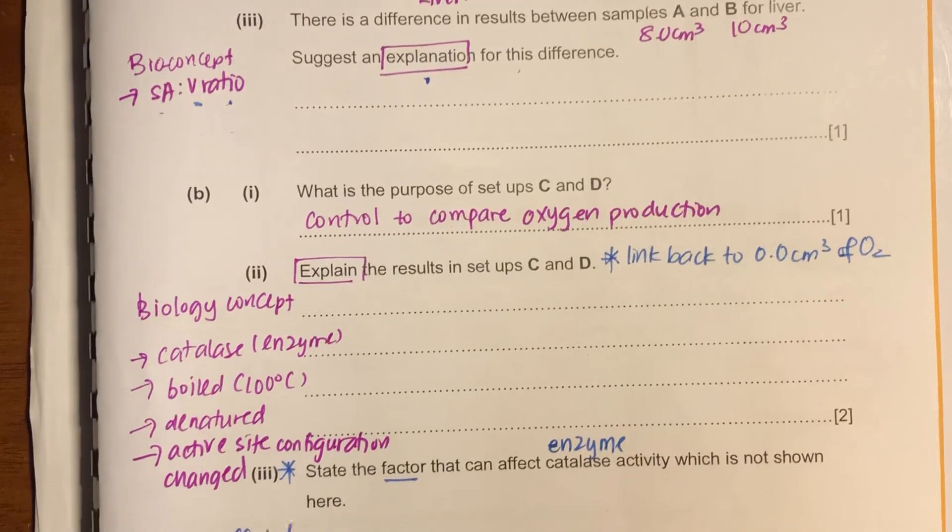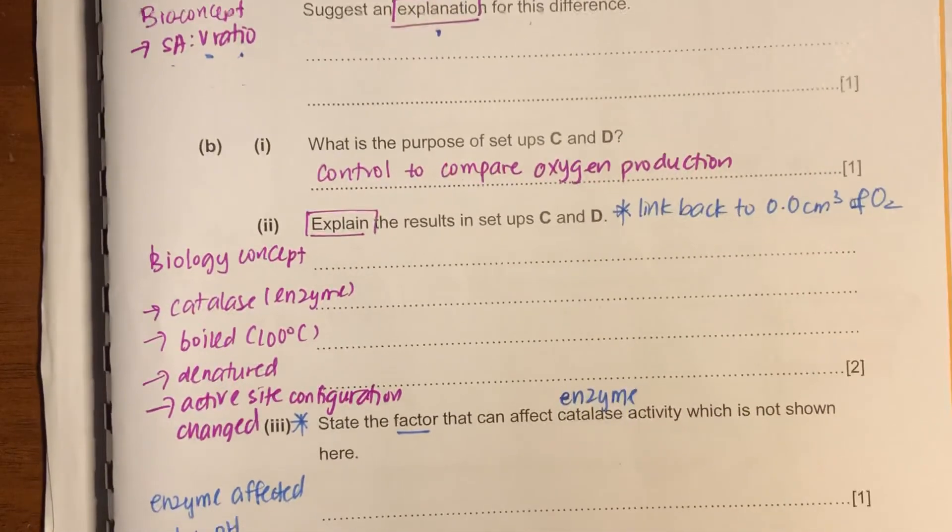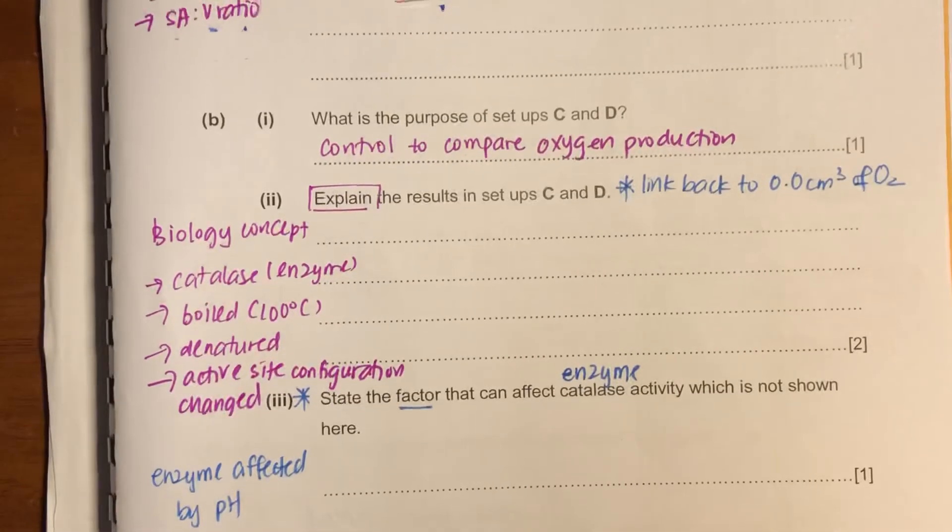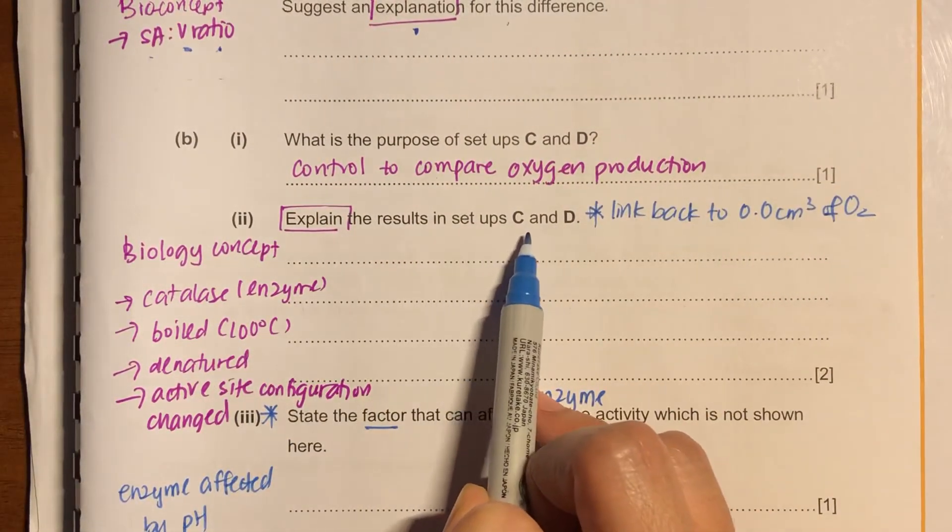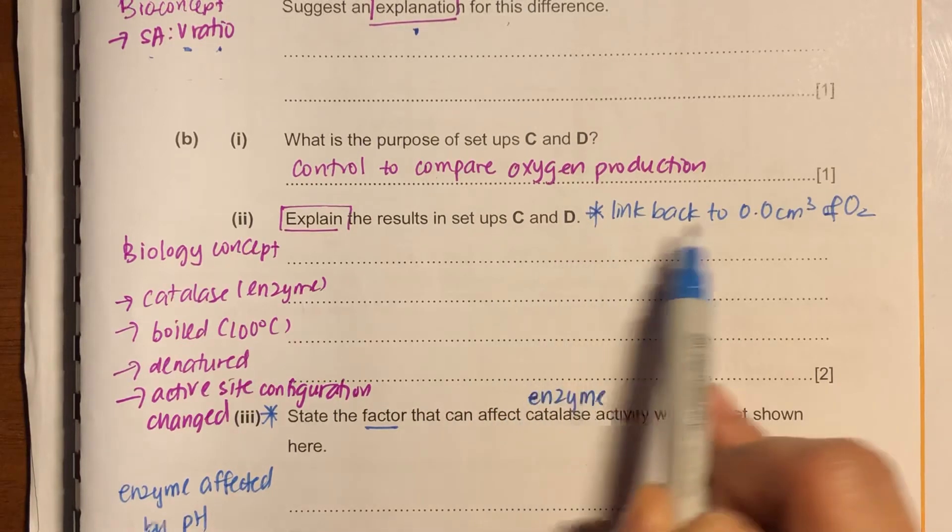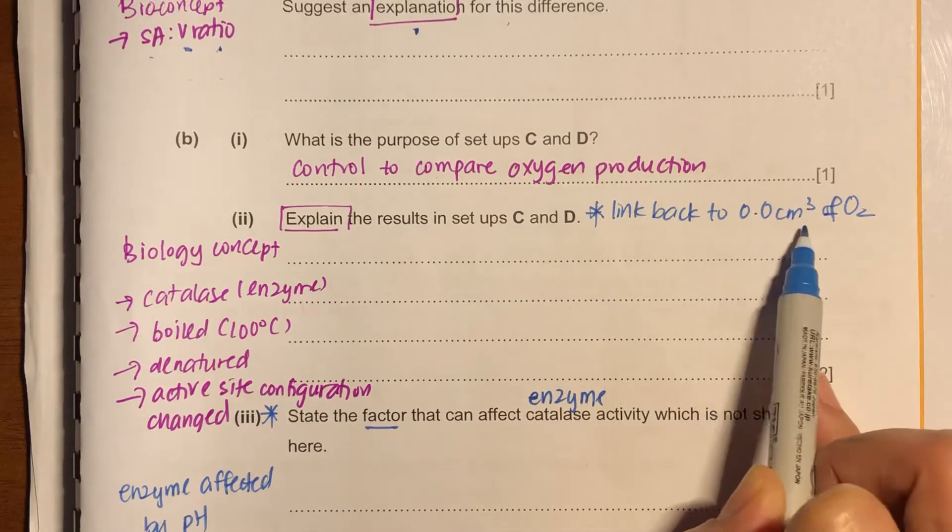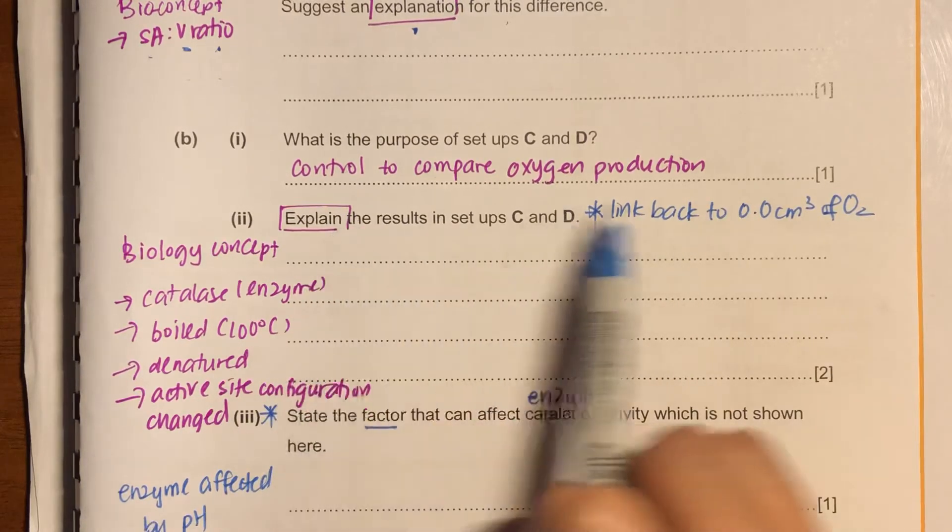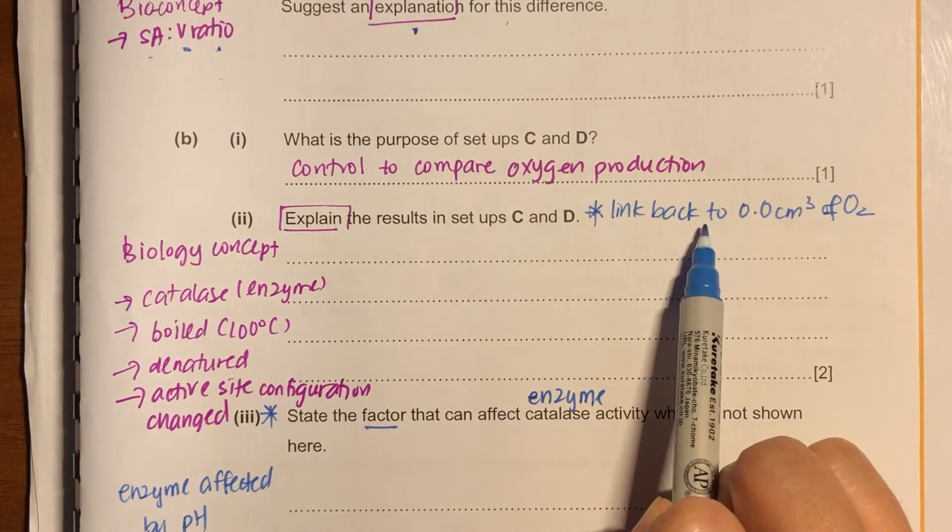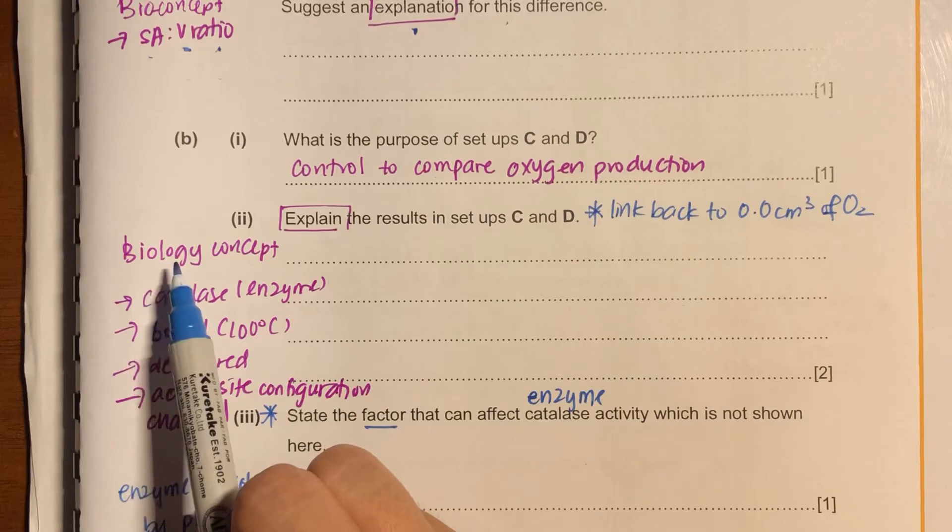B part one, I think it's easy. Then again, for B part two, you can write down here, explain the results in set up C and D. In C and D, there's 0.0 cm³ of oxygen. Now, if you wrote this, you are not explaining because you're not talking about the biology concept.